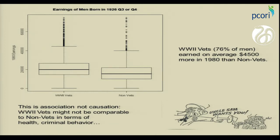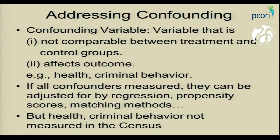But this doesn't adjust for any confounders. One confounder is health — if you were unhealthy, you would not have been eligible to serve in the military. Another confounder is criminal behavior — if you had a criminal record, you wouldn't have served. Health and criminal behavior are confounding variables in that they're likely not comparable between veterans and non-veterans, and they're likely to affect earnings.